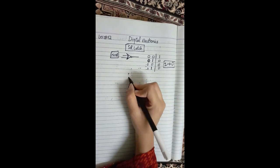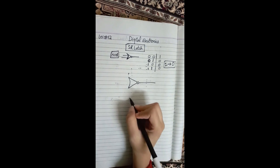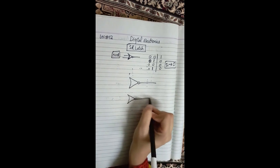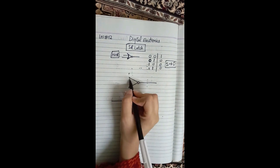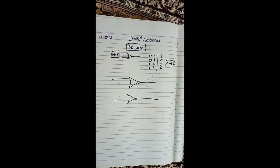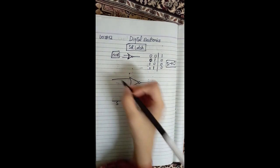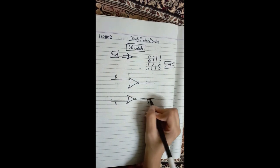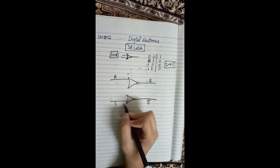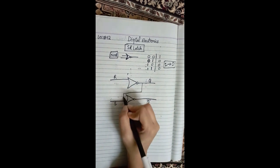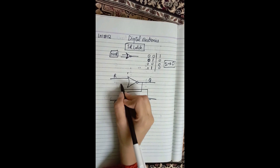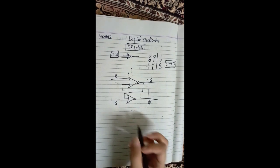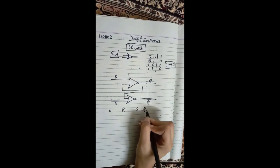Now we will draw the SR latch. We have one NOR gate for S and another NOR gate for R — SR means Set-Reset. Their outputs are Q and Q̄. The S NOR gate output is Q̄ and the R NOR gate output is Q. The inputs are: S and Q̄ fed into the S gate, and R and Q̄ fed into the R gate — this forms the cross-coupled feedback. Now we will make its truth table with columns S, R, Q, and Q̄.